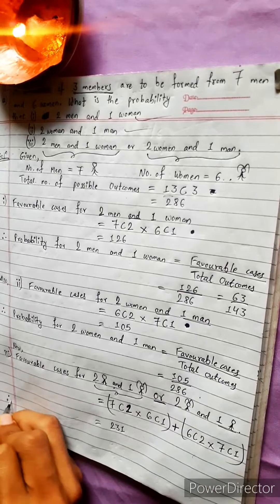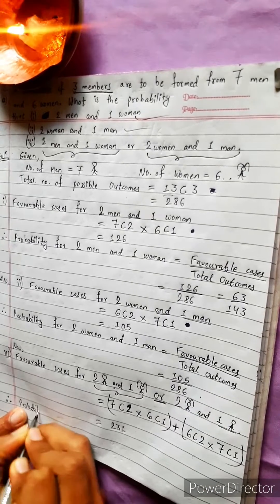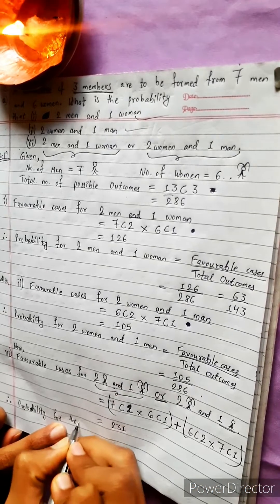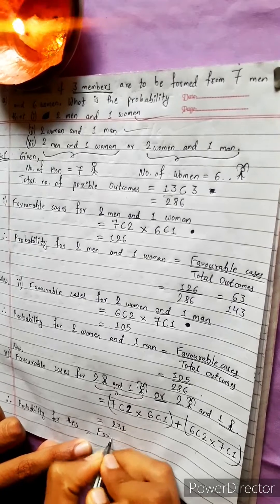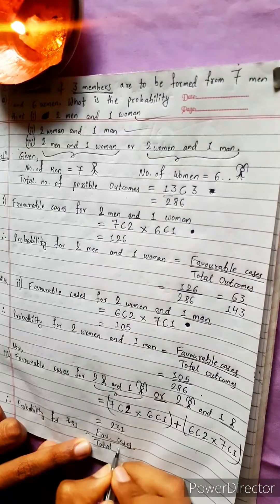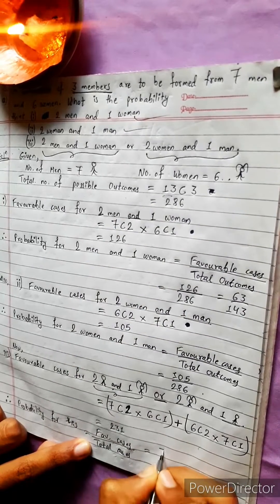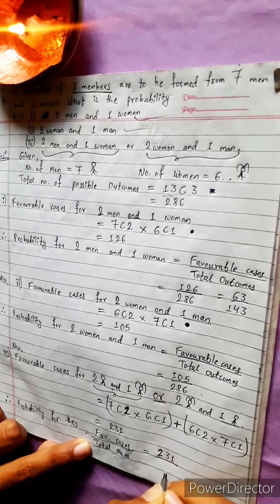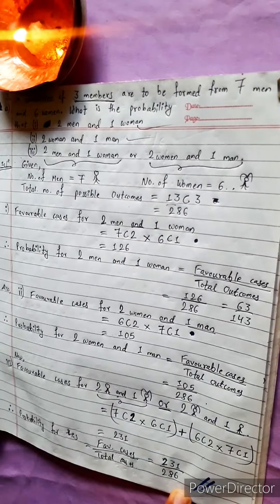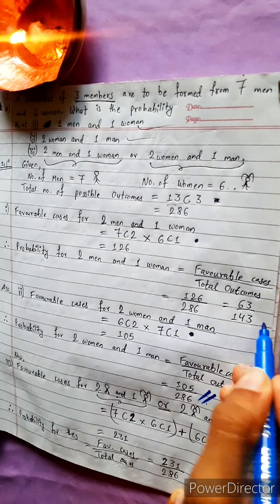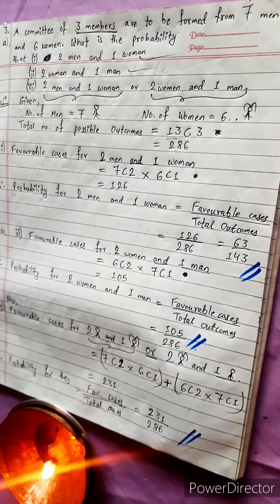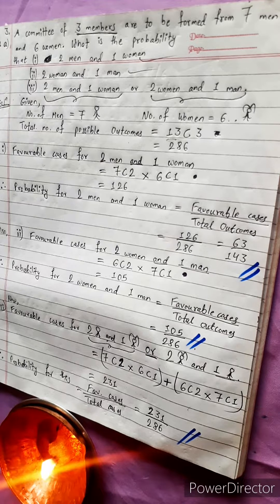So the probability for at least one woman equals 231 divided by 286. We now have all three answers. This is very easy — be ready for the next question. Bye.